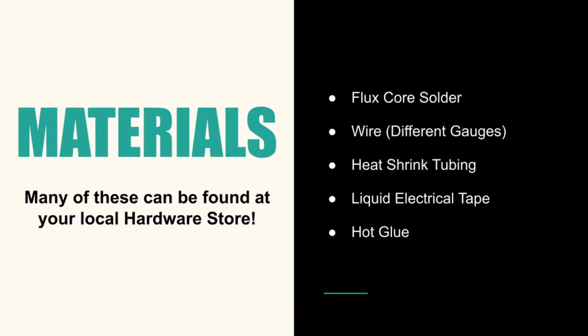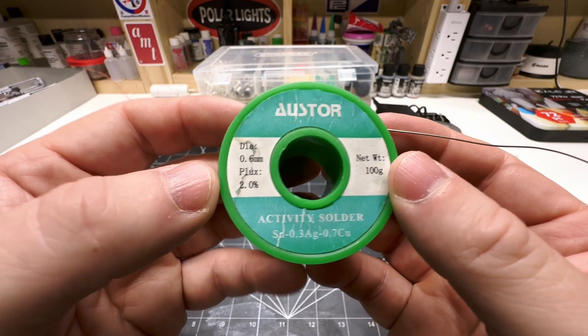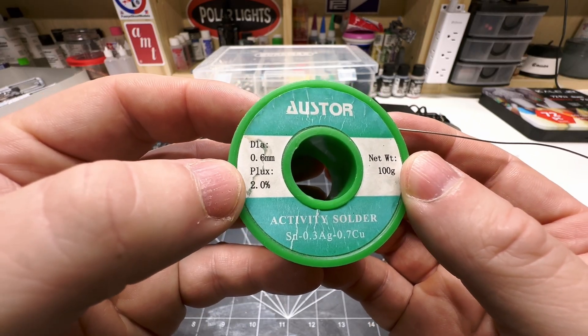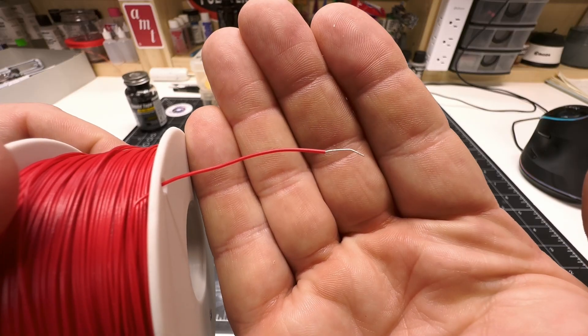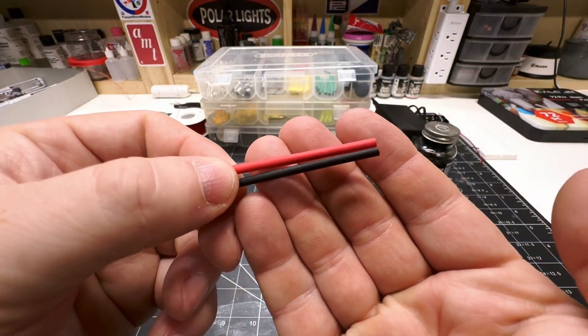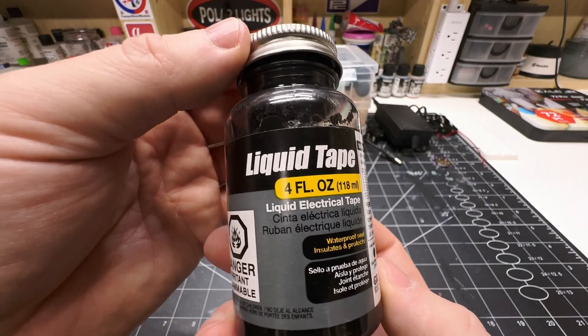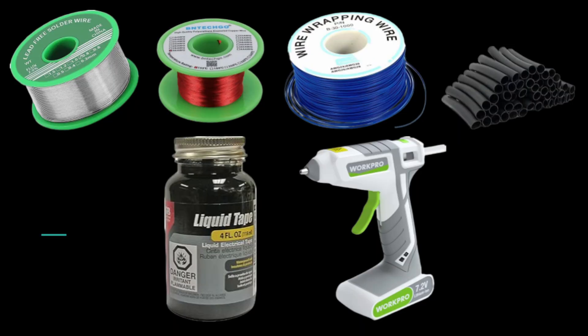Next, let's look at materials. The everyday building blocks of your circuits. Flux core solder. Flux is the medium that allows solder to flow when heated. Different gauges and colors of wire. I personally prefer magnet wire or wire wrapping wire. Heat shrink tubing or liquid electrical tape to insulate solder joints. Glue or other adhesives to secure components so nothing moves around inside the model. That's all you need to build safe, clean, and functional lighting setups.